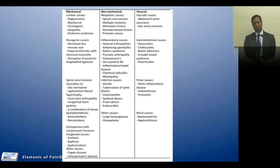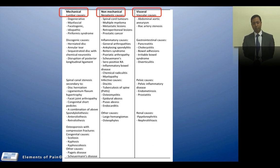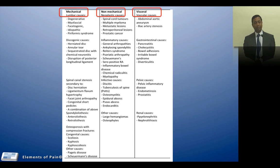We now look at a list of causes classified into mechanical, non-mechanical, and visceral causes. Under mechanical causes you have lumbar causes, discogenic causes, spinal canal stenosis, and other causes such as congenital causes and acquired causes such as Paget's disease and Scheuermann's disease, where you have deposition of calcium and calcification of several different areas. Non-mechanical causes can be divided into neoplastic, inflammatory, and infective — bearing in mind that tuberculosis can have a rare presentation in some patient groups — and other causes such as large haemangiomas presenting with vertebral body pains, with osteophytes being more common.